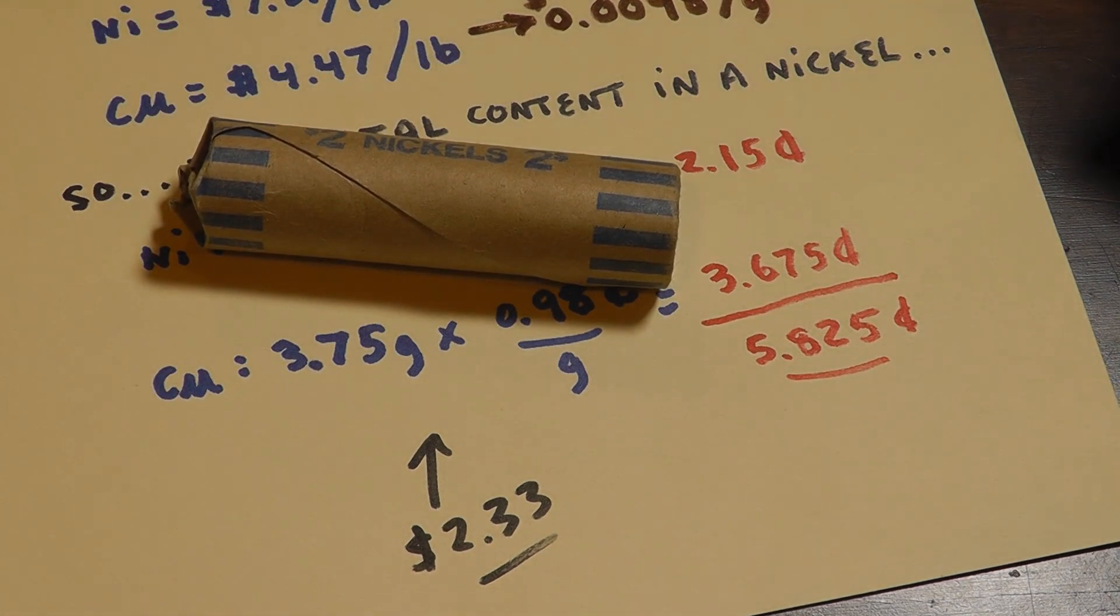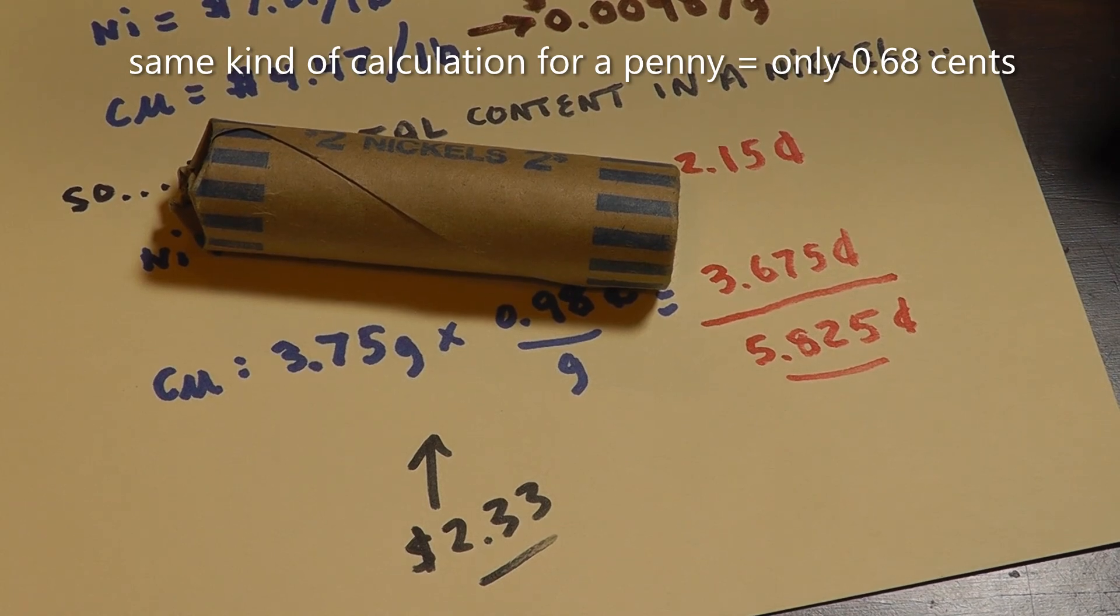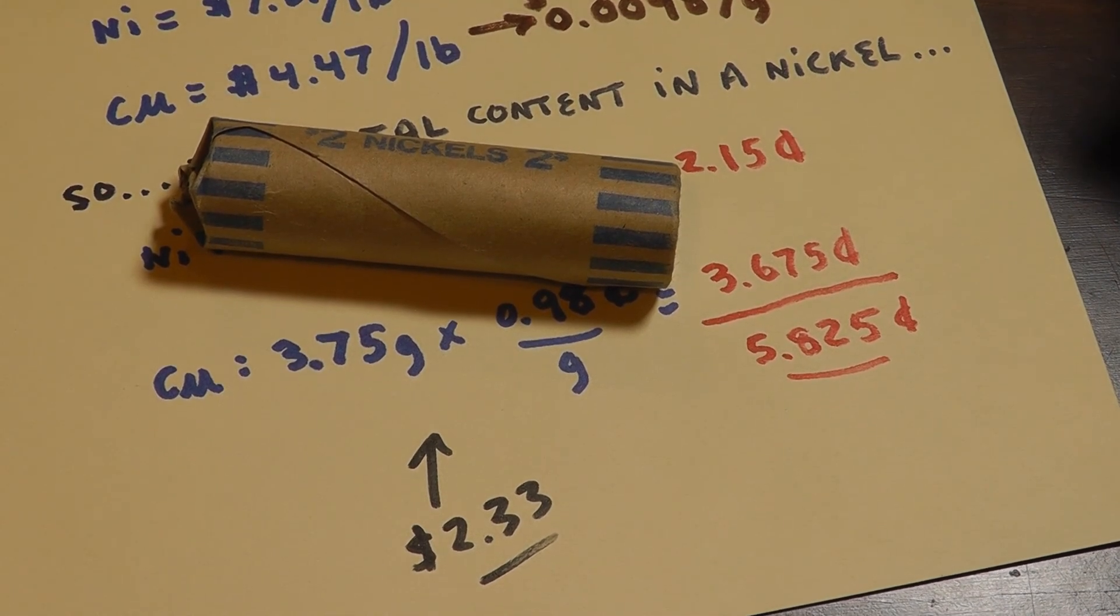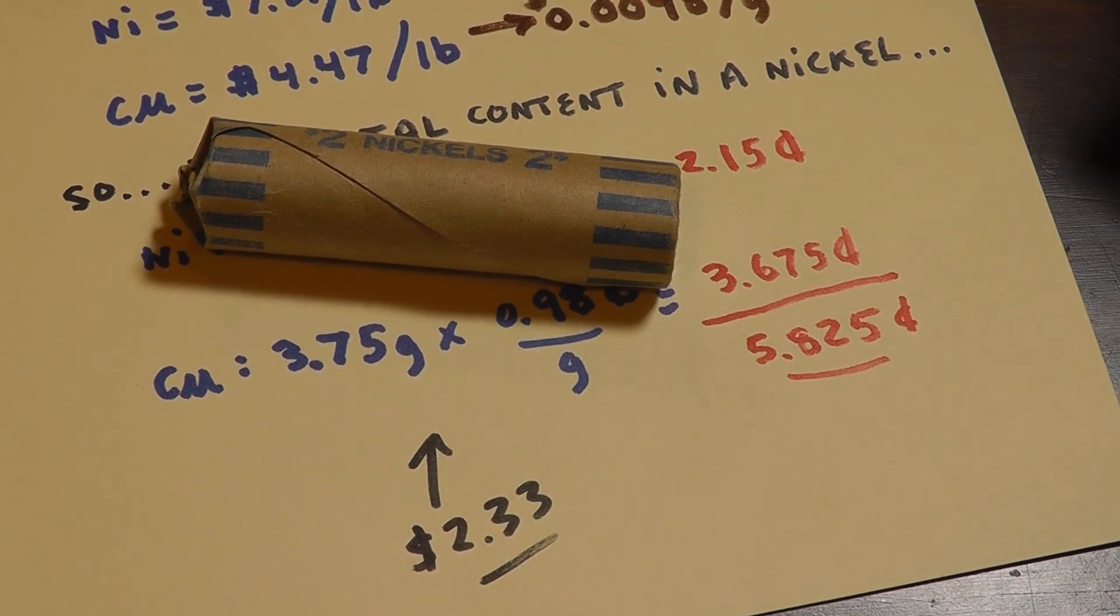So I hope you enjoyed this number crunching. Check my numbers, check the spot prices. I'm not faking anybody out, but no one's talking about how a nickel is almost worth five, six cents. No one's talking about it. Everybody's talking about Ethereum and Bitcoin and I think it's dogecoin, and not nickel coin. Okay, bye.